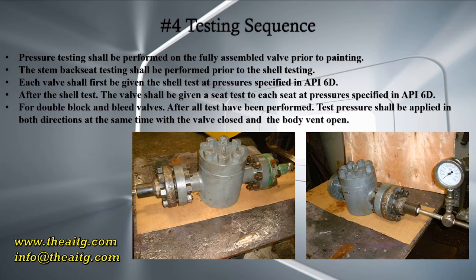For double block and bleed valves, after all tests have been performed, test pressures shall be applied in both directions at the same time with the valve closed and the body vent open. In this photo you can see a valve being tested with blind flanges performing a shell test. In this photo they are performing a seat test.